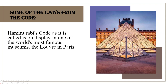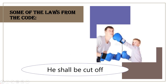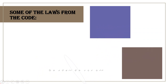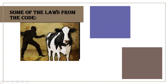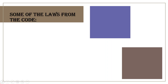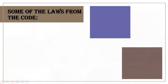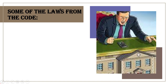Here are some of the laws from the code. If a man kills another man's son, his son shall be cut off. If a son slaps his father, his hand shall be cut off. If a person steals cattle, sheep, an ass, a pig or a goat belonging to a god or the court, the thief has to pay 30 times the cost. A judge who makes a mistake in law can never be a judge again and will be heavily fined. If a man builds a house badly and it falls and kills the owner, the builder has to die. The punishment for serious crimes was death, and no excuses or explanations were acceptable at the time.